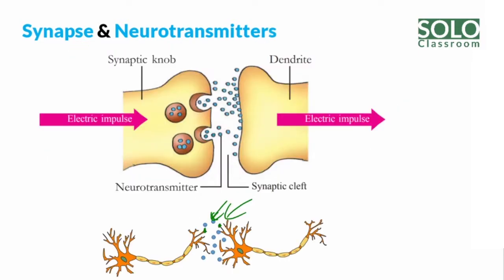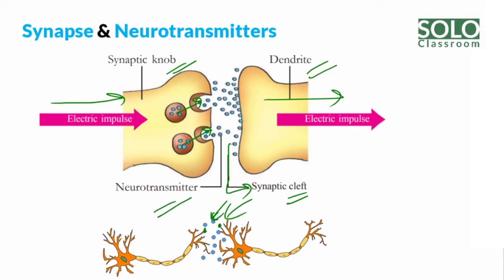Here we have one neuron at its tail, and it's called the neurotransmitter. It connects to the second neuron at the dendrite, carrying the electric impulse from one neuron to the other neuron. The gap between them is called the synaptic cleft. So our four key terms are: synaptic knob, dendrite, neurotransmitter, and synaptic cleft.